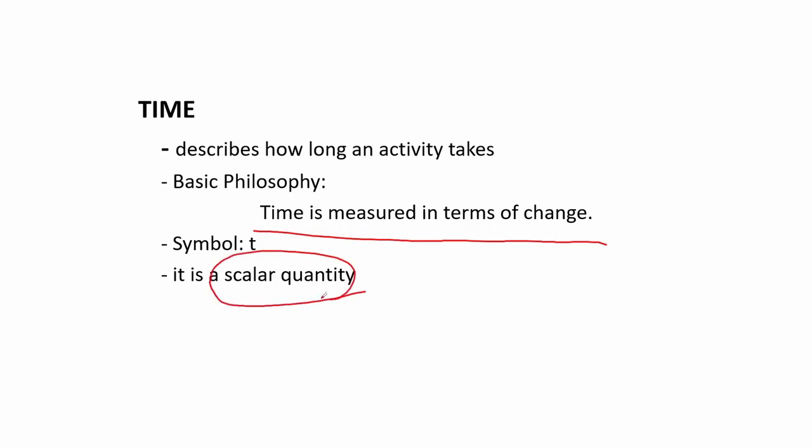Its symbol is simply called t. It is a scalar quantity which means it has no direction. So that means time changes the same in all directions.